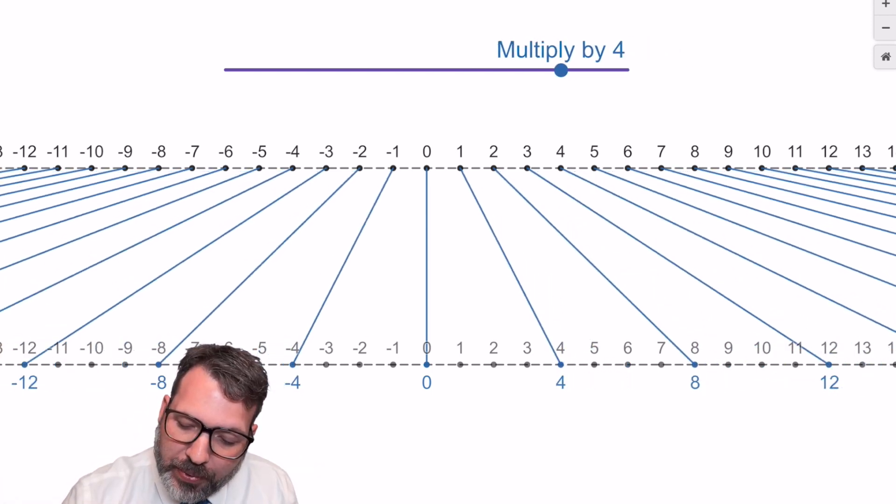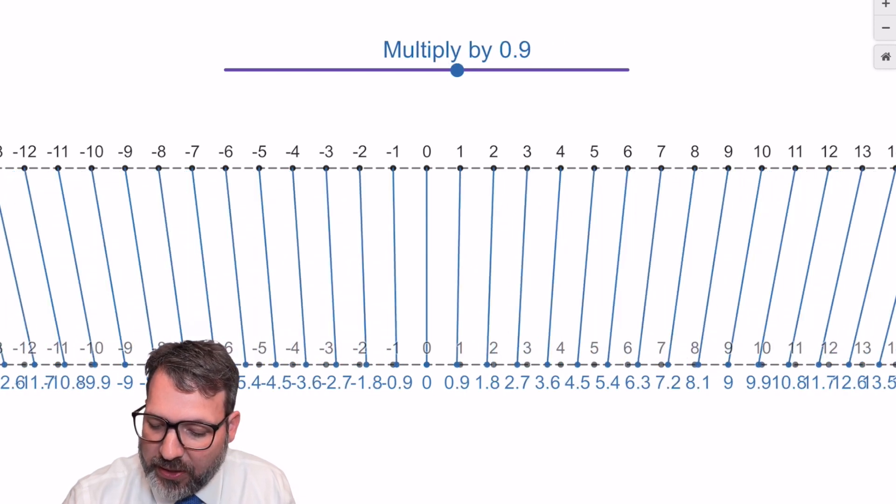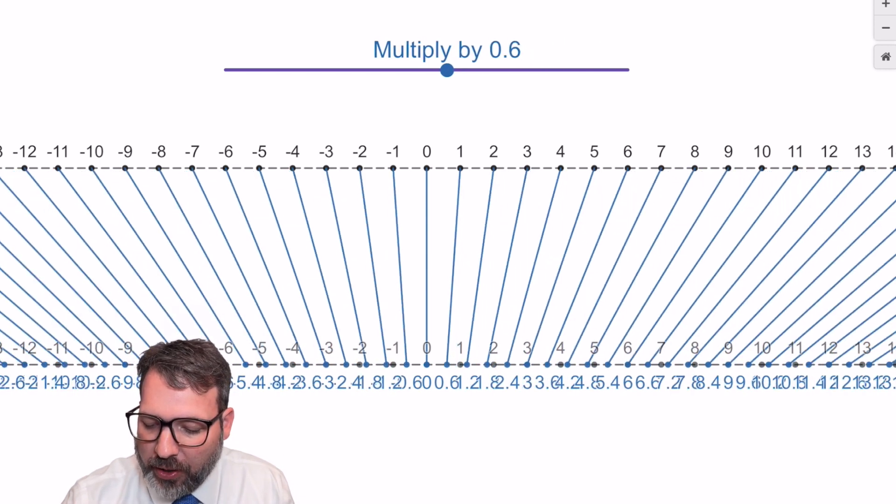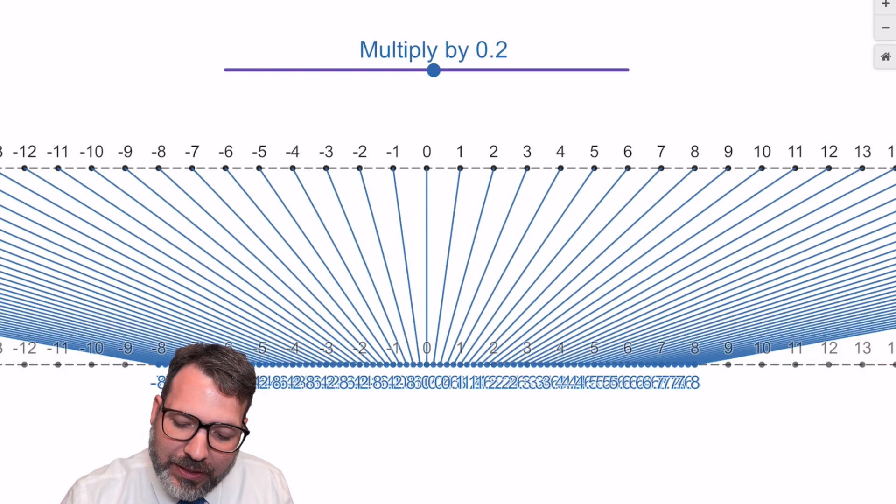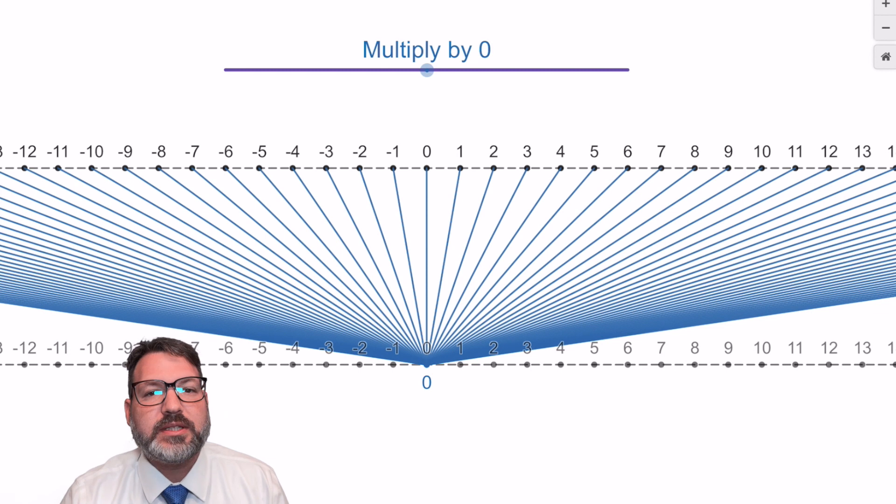On the other hand, we can also pick scalars that are still positive, but between 0 and 1. And what that's going to cause is this number line to collapse and get smaller and smaller, until when our scale factor becomes 0 itself, everything maps onto 0 at that point.